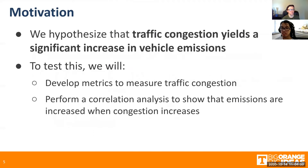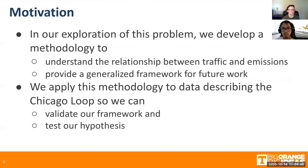We hypothesize that traffic congestion yields a significant increase in vehicle emissions. To test this, we will develop metrics to measure traffic congestion and also perform a correlation analysis to show that emissions are increased when congestion increases. In our exploration of this problem, we develop a methodology to understand the relationship between traffic and emissions and provide a generalized framework for future work to build off. We apply this methodology to data describing the Chicago Loop to validate our framework and also test our hypothesis.